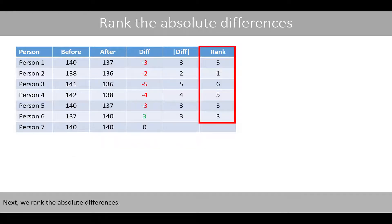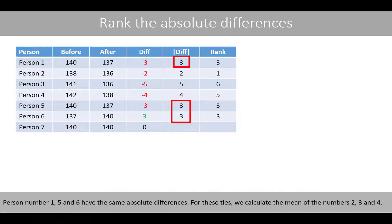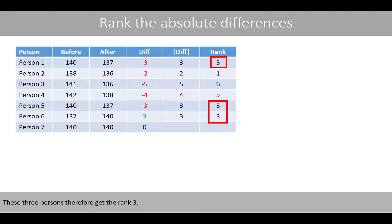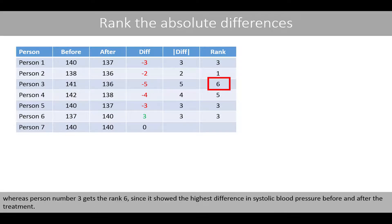Next, we rank the absolute differences. Since we have excluded person number 7, the second person now has the smallest difference in blood pressure, so person number 2 gets rank 1. Persons number 1, 5, and 6 have the same absolute differences; for these ties, we calculate the mean of ranks 2, 3, and 4, so these three persons each get rank 3. Person number 4 gets rank 5, and person number 3 gets rank 6, since it shows the highest difference in systolic blood pressure.